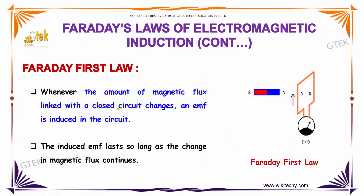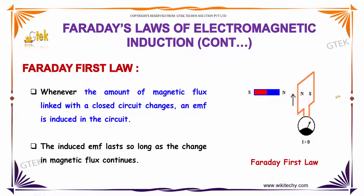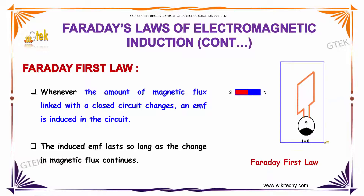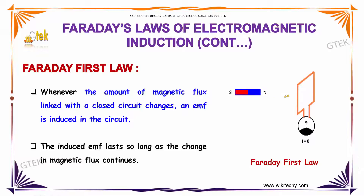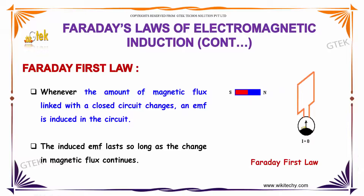This is Faraday's first law: whenever the amount of magnetic flux linked in a closed circuit changes, an EMF is induced in the circuit. The induced EMF lasts so long as the change in magnetic flux continues. When a magnet is coming near, the induced EMF causes the galvanometer to deflect.